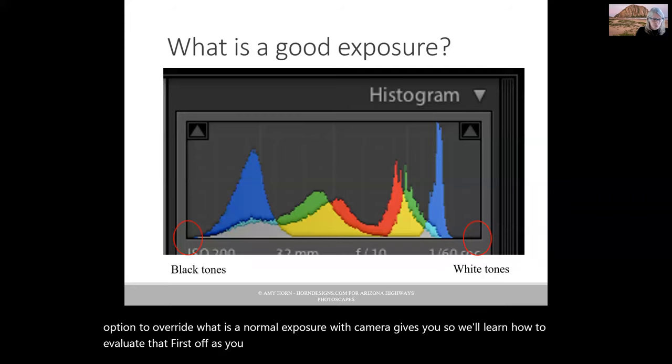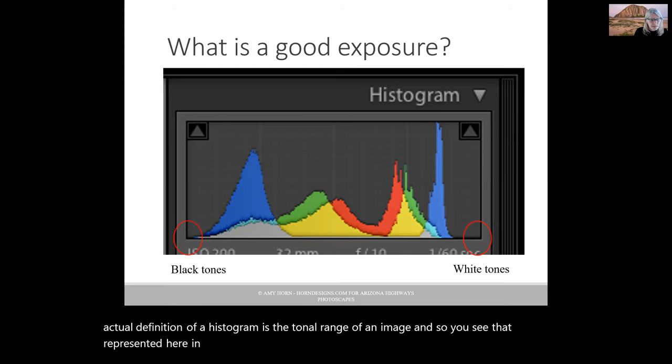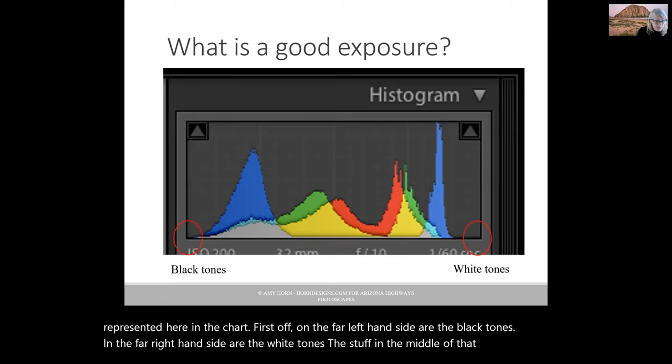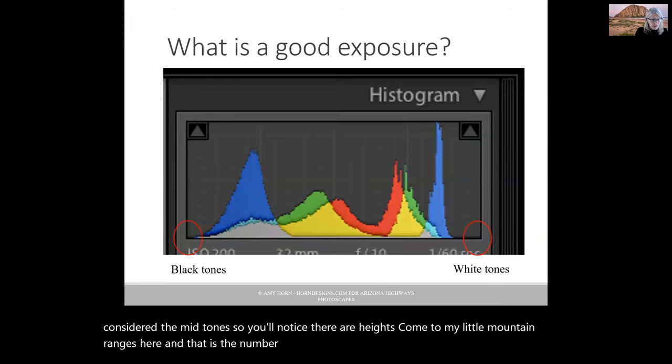First off, as you look at the diagram of a histogram like you see right here, an actual definition of a histogram is the tonal range of an image. You see that represented here in the chart. On the far left-hand side are the black tones, and the far right-hand side are the white tones. The stuff in the middle of that chart are considered the mid-tones. The heights of my little mountain ranges are the number of pixels in that tonal range.